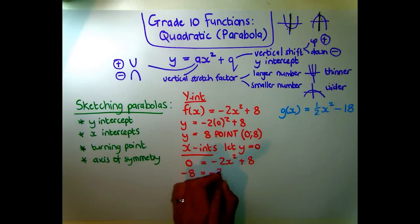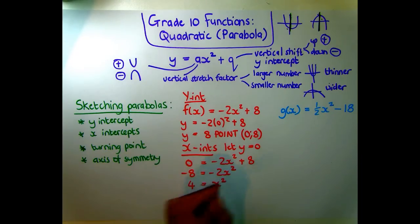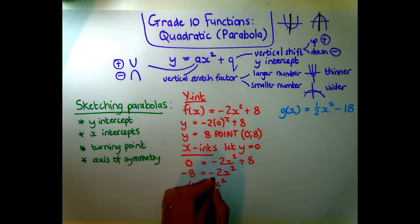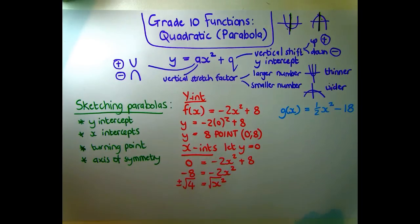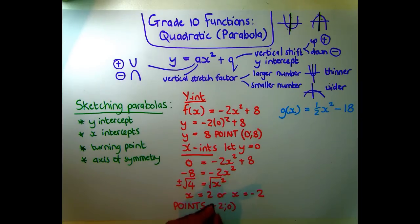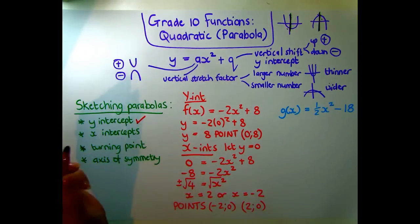Moving the 8 across and dividing through by -2 gives 4 = x². We can either move the 36 across and use difference of two squares, or remember that square-rooting gives plus and minus on the other side. So x = 2 or x = -2. The x-intercept points are (-2, 0) and (2, 0).